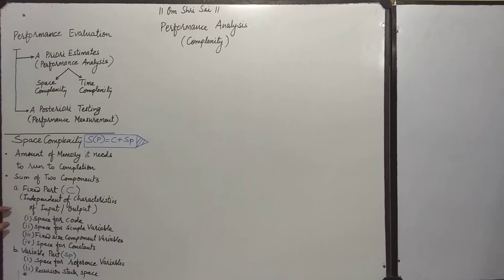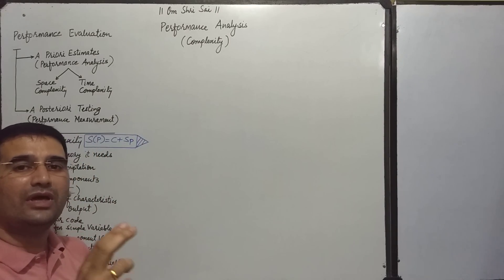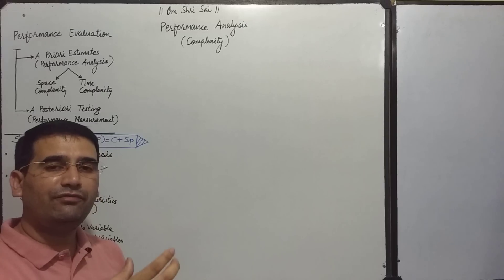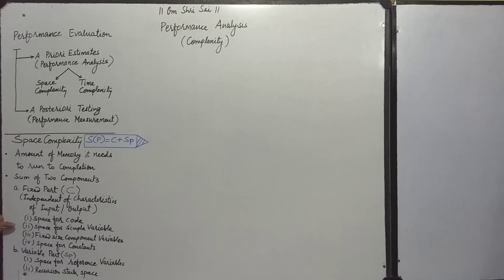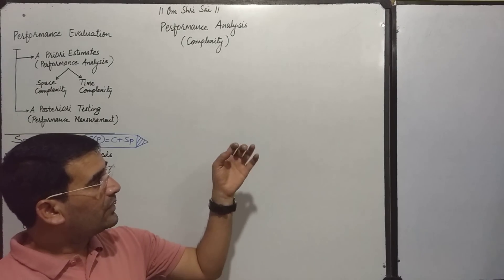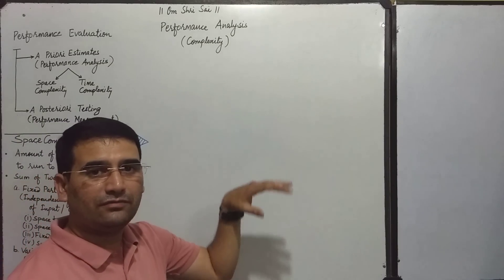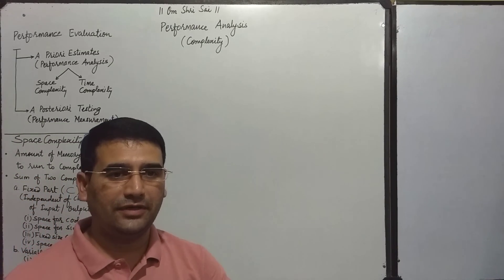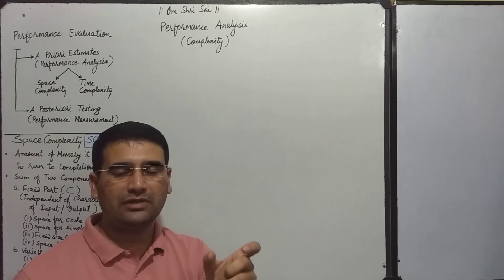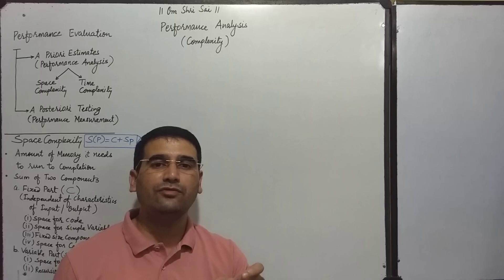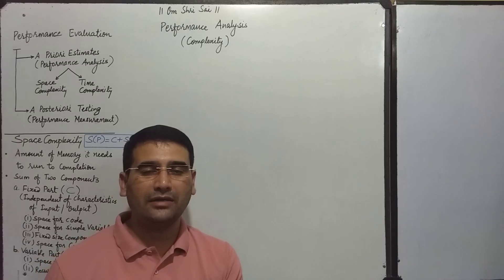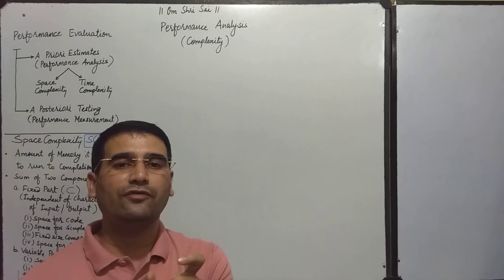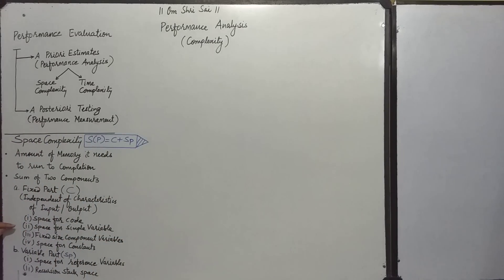The fixed part consists of space for code, which we may treat as a constant. The second part is space for simple variables — the number of variables used in the algorithm will consume a fixed amount of memory. For example, if we use three variables, it will take three words of memory, assuming each variable consumes one word of memory.